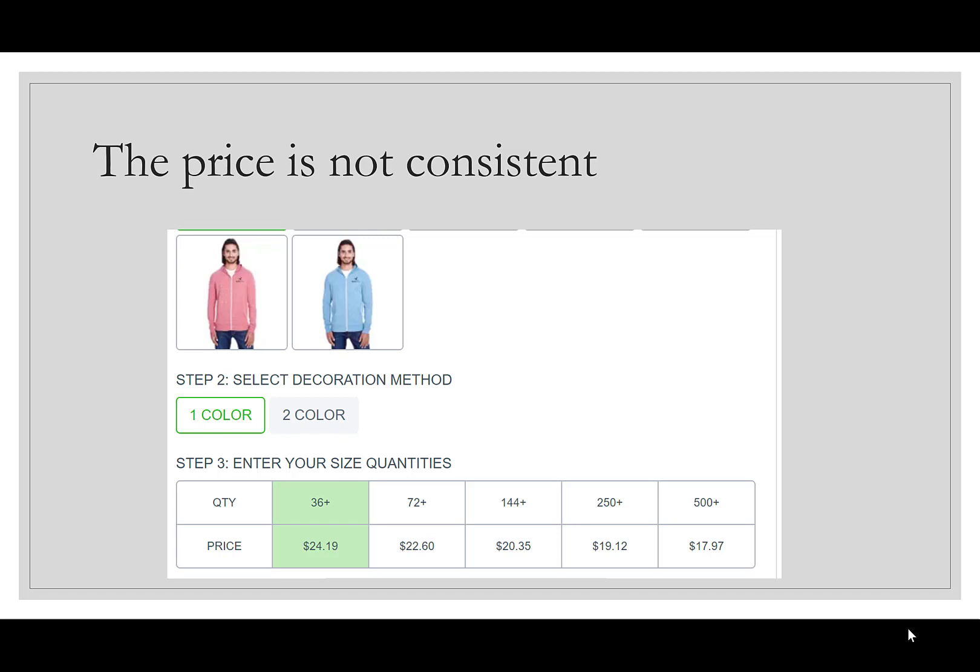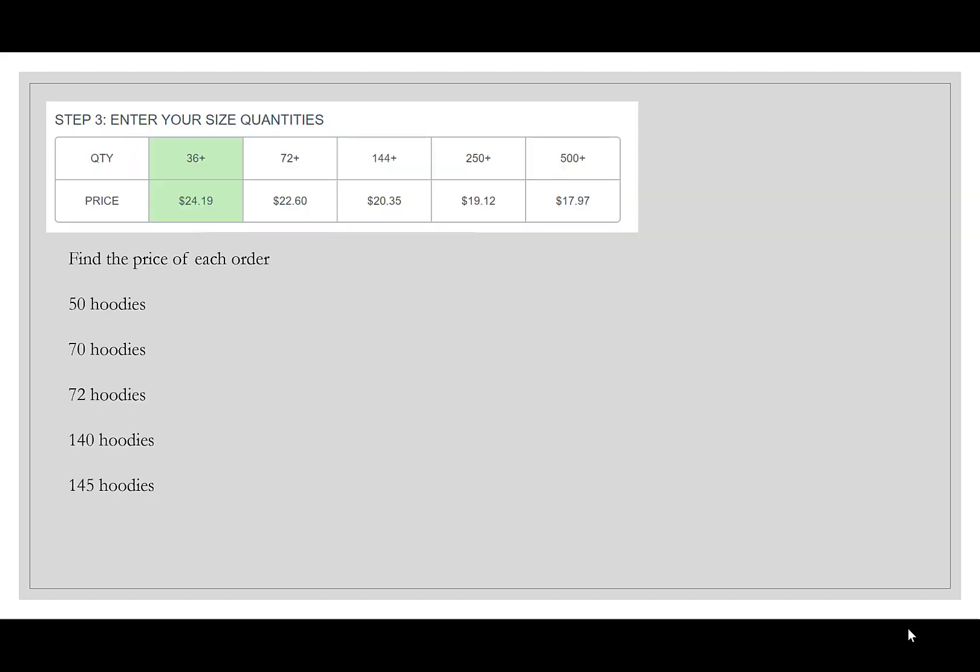250 or more, we pay $19.12, and if you order more than 500, the price would be $17.97 apiece. So what we see here is that the price is changing with quantity. The more you buy, the less it costs. We've talked about price demand - when price goes down, our willingness to buy goes up, and we can see that reflected in this pricing structure. Let's find some prices to make sure we understand how this works. Let's start with 50. 50 is in the 36 plus, so we're going to pay $24.19 times 50, which is $1,209.50.